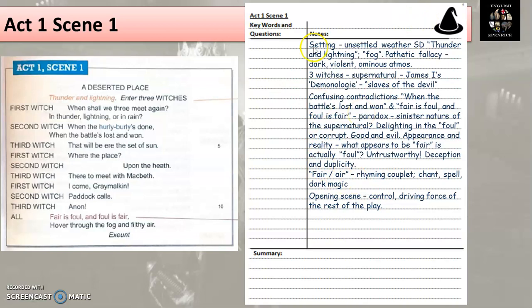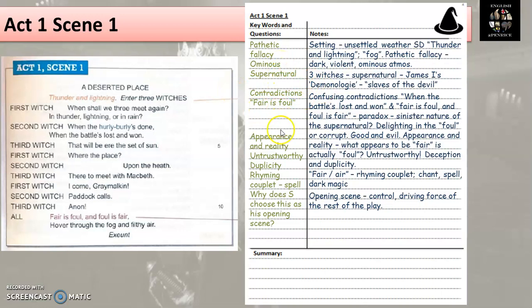Then moving on to the keywords and questions column. After my notes section has been completed, I'm just going to condense my notes into keywords and questions. I've chosen a different color just because that really helps with revision and review. You don't have to. And I've condensed them. As you can see, I've picked pathetic fallacy, ominous atmosphere, the links of supernatural, contradictions, and so on. So I have chosen the words and the phrases and the questions that I think are most important to this particular scene and I've taken them from my more detailed notes.